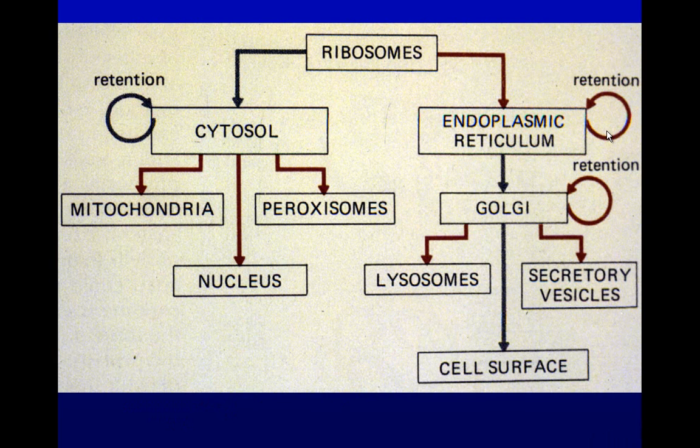Ribosomes are free in the cytosol initially. If they produce a signal peptide, they associate with the rough endoplasmic reticulum. If there's no signal, they stay in the cytosol — that's how proteins are added to mitochondria, peroxisomes, and the nucleus. In contrast, if they have a signal peptide that binds to the rough endoplasmic reticulum, the protein is placed inside the cisternae of the endoplasmic reticulum and then continues to the Golgi, secretory granules, cell surface, or lysosome.